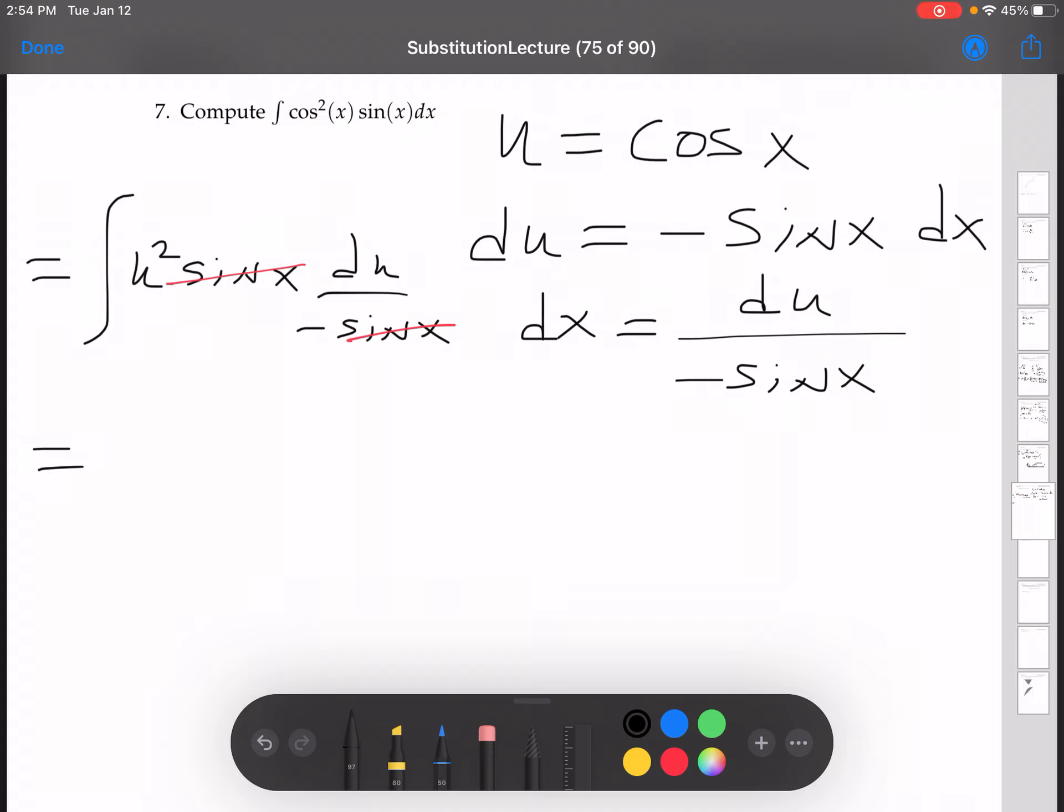Remember, you can think of this negative down here as it's 1 over negative 1, which is negative 1. So I'm going to pop a negative 1 out to the front. Got u squared du, negative u cubed over 3 plus c.